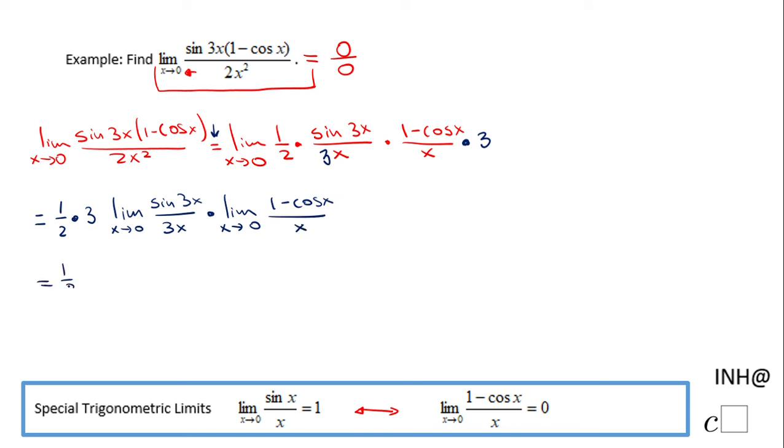So we end up here with 1 over 2 times 3, and this limit here is the same as this one. We have 3x and 3x, and that will be 1. And the second limit, this one, you notice is right here and that is 0. So we have the product of these four numbers. One of them is 0, so obviously the product will be 0.